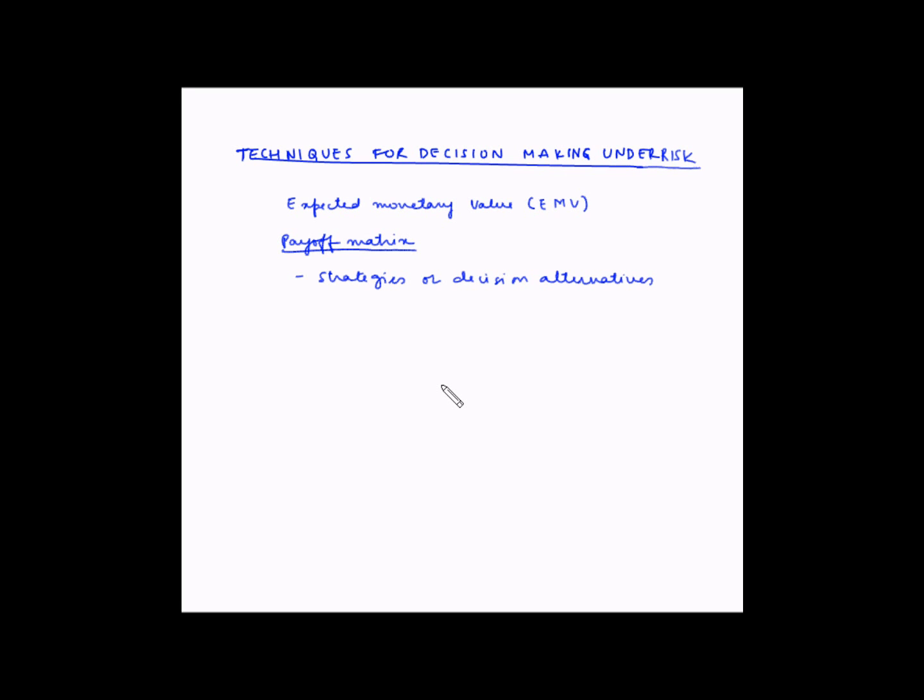At the same time, irrespective of the strategy you choose, there are six possible outcomes that may happen. These are known as the events.